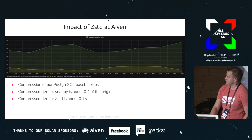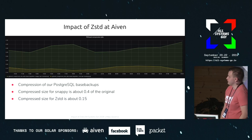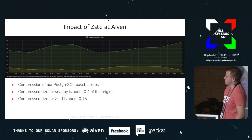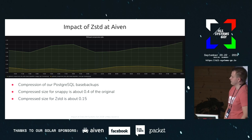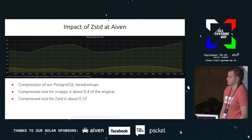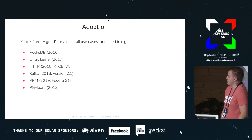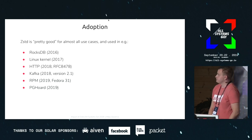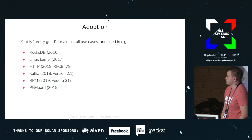Looking at some data from our production system — this was taken this morning. It's PostgreSQL base backups side-by-side: the mean value running with Snappy, which is what we used before, versus zStandard, which is what we're using now. The results are pretty good. It's been adopted by quite a lot of projects over the years, so other people have also noticed that it's kind of cool.